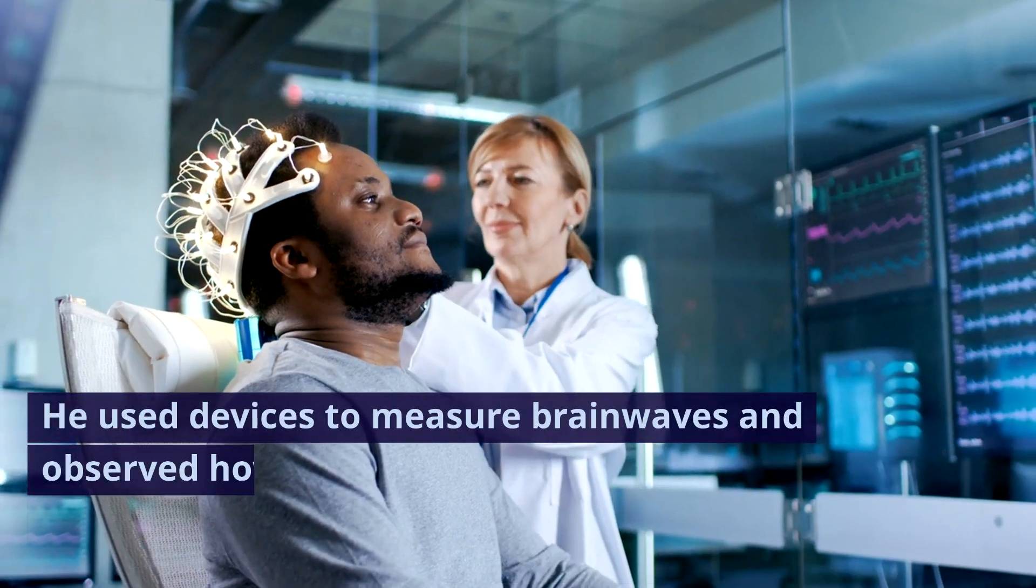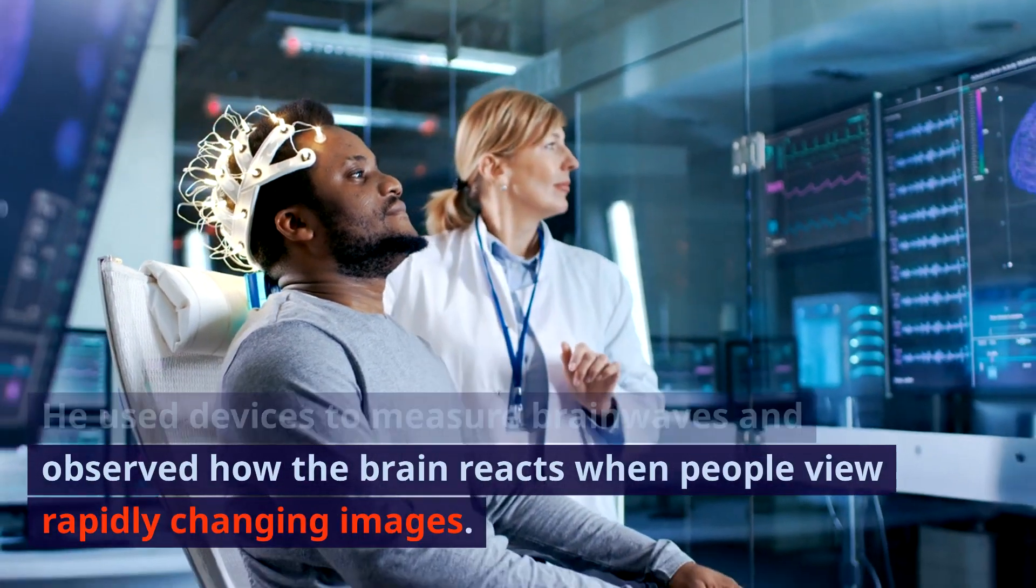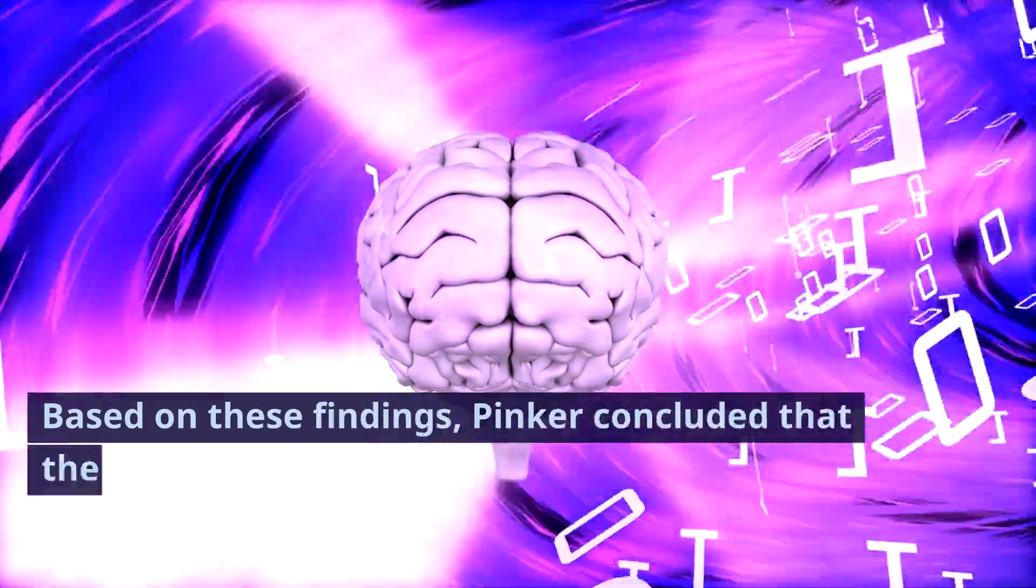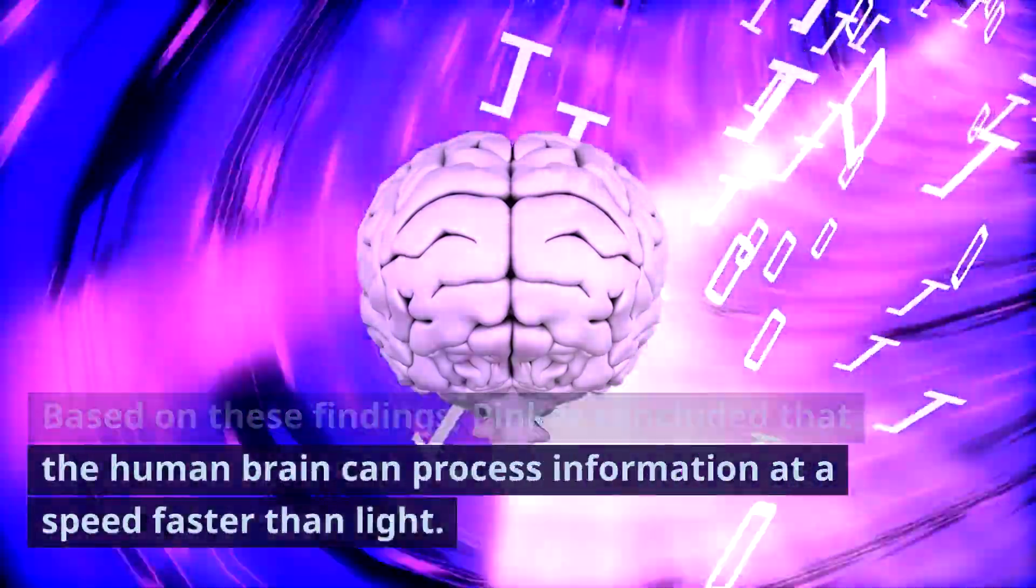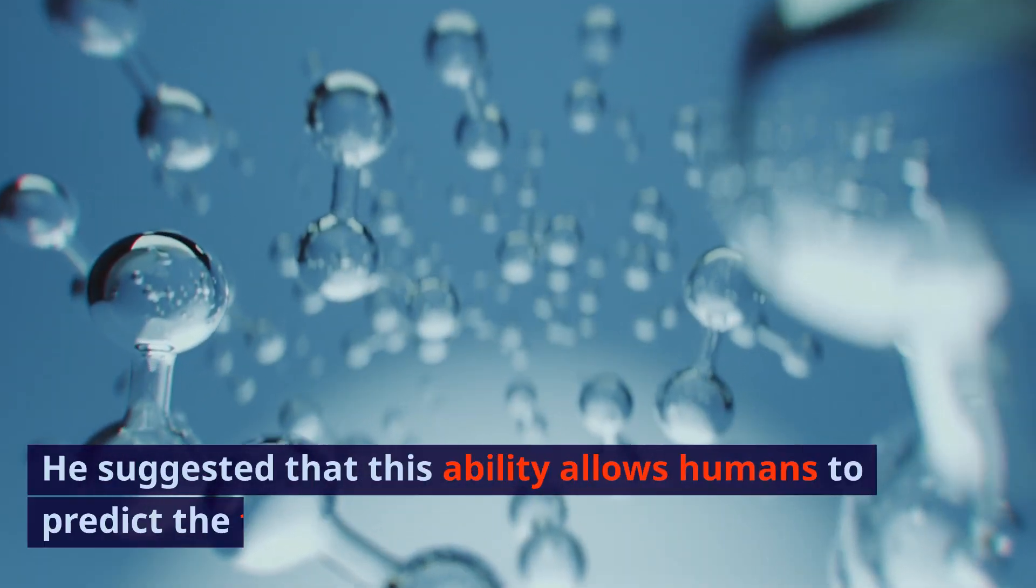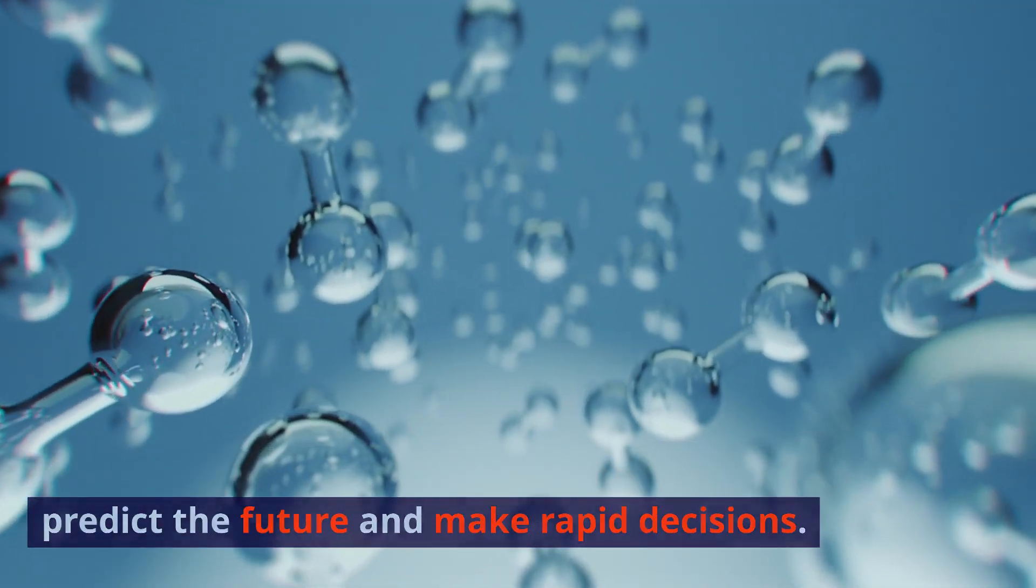He used devices to measure brain waves and observed how the brain reacts when people view rapidly changing images. The results showed that people were able to perceive the images before they underwent a change. Based on these findings, Pinker concluded that the human brain can process information at a speed faster than light. He suggested that this ability allows humans to predict the future and make rapid decisions.